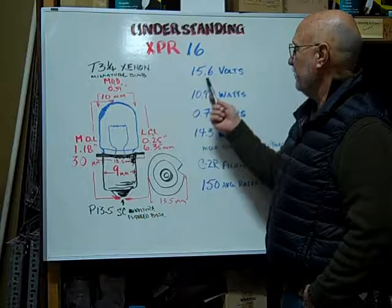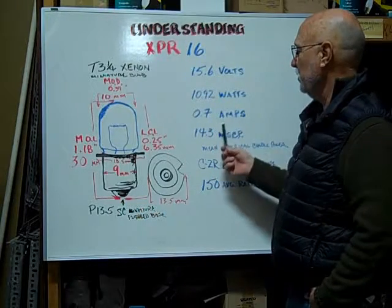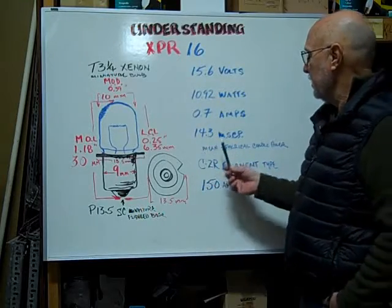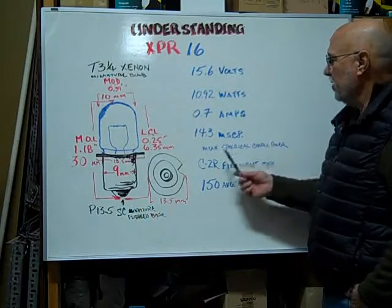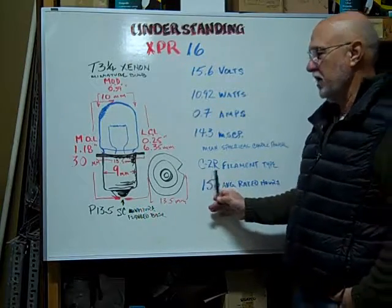The volts are rated at 15.6. The watts are 10.92. Amps are rated at 0.7. The mean spherical candle power is 14.3. Filament type is a C-2R.